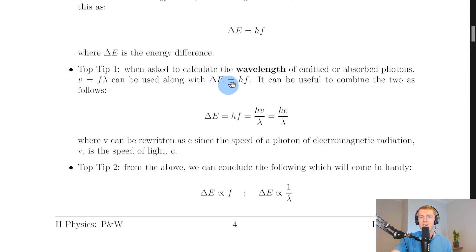Top tip number one: when asked to calculate the wavelength of emitted or absorbed photons, v equals f lambda can be used along with delta E equals hf. Starting with delta E equals hf, if we rearrange v equals f lambda for f by dividing both sides by lambda to get f equals v over lambda and replace f, we get delta E equals hv over lambda, which equals hc over lambda where v can be rewritten as c since the speed of a photon is the speed of light. This is really useful when dealing with wavelength instead of frequency, with both h and c found on your data sheet.